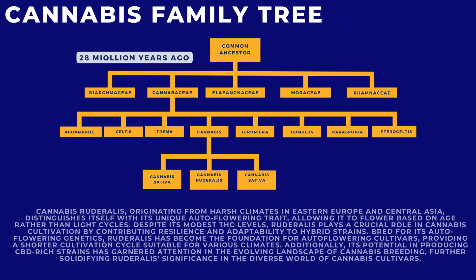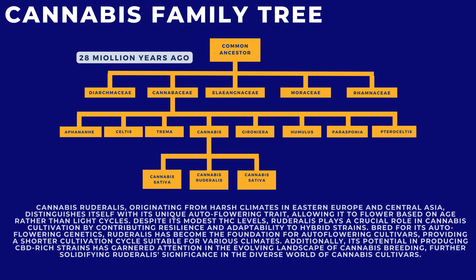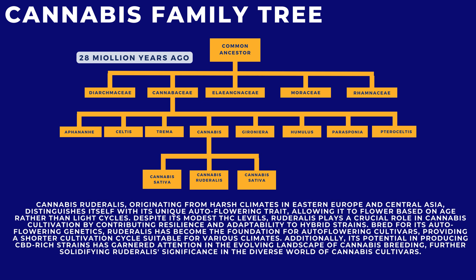Cannabis ruderalis, originating from harsh climates in Eastern Europe and Central Asia, distinguishes itself with its unique autoflowering trait, allowing it to flower based on age rather than light cycles. Despite its modest THC levels, ruderalis plays a crucial role in cannabis flowering genetics. Ruderalis has become the foundation for autoflowering cultivars, providing a shorter cultivation cycle suitable for various climates.